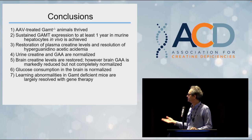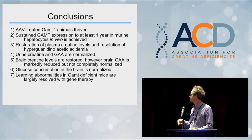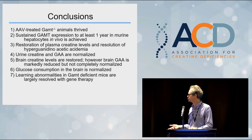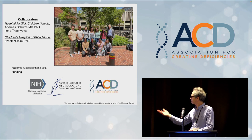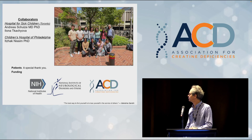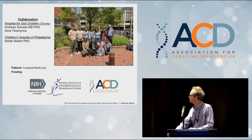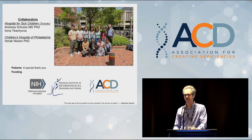In conclusion, the AAV-treated mice thrived. We had sustained expression for at least a year. Plasma levels of creatine and hyperguanidinoacetic acidemia were resolved. Urine creatine and GAA are normalized. Brain creatine levels are normalized at one year, though GAA is still somewhat elevated. Glucose consumption in the brain is normalized in treated mice, and learning abnormalities are also resolved or nearly resolved. I would like to recognize colleagues in my lab, collaborator Andreas Schulze and his lab member Alana Tukikova, our collaborator at Children's Hospital of Philadelphia, and particularly the ACD for funding support.